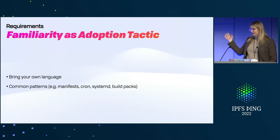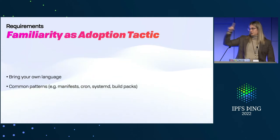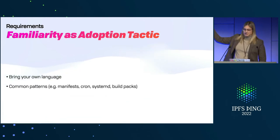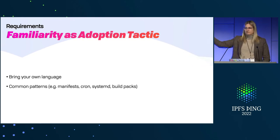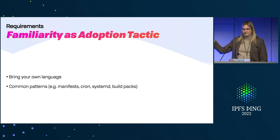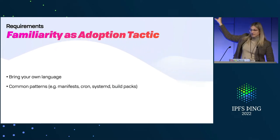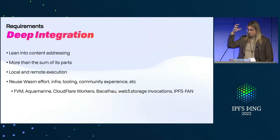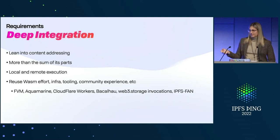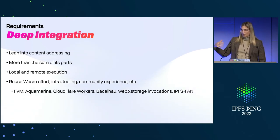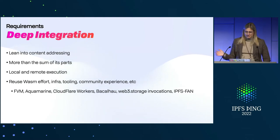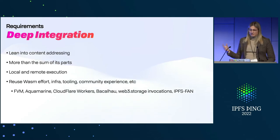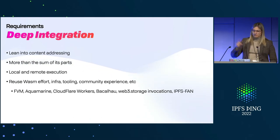Having a WASM execution where you can just say 'run this function over that thing' is already amazing. But this should be able to plug into systemd, cron jobs, all of that. As I pull stuff down, maybe I want to process it, build indices. How we write that up in a familiar way is important. Deep integration with the system — we want to lean into content addressing. It's not just an S3 bucket; it deduplicates, you can grab it from a bunch of peers, you can write things back. It needs to be more than the sum of its parts — more than just compute, more than just data. There needs to be deep integration between these. It needs to have remote and local execution.